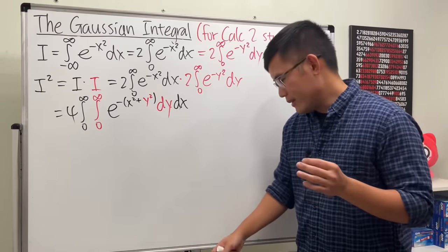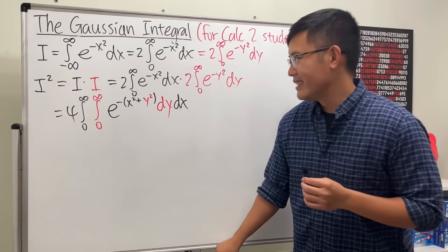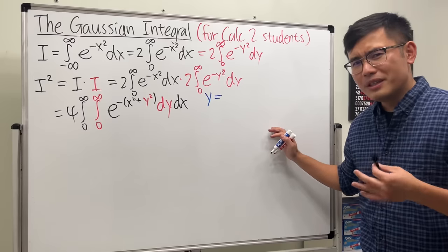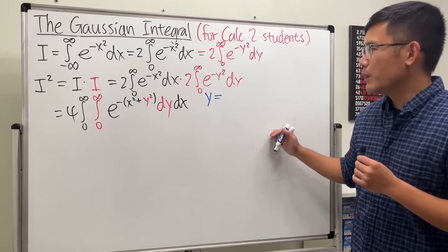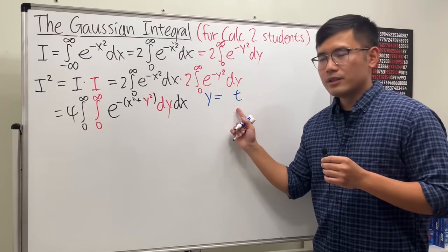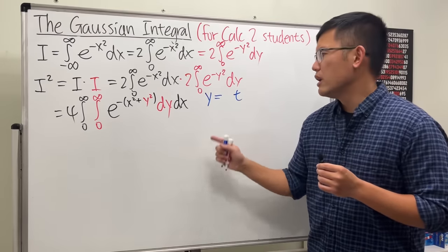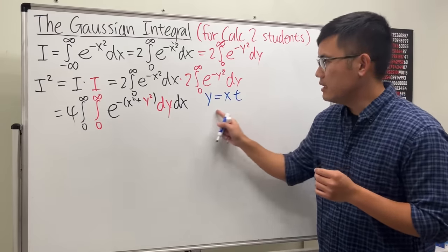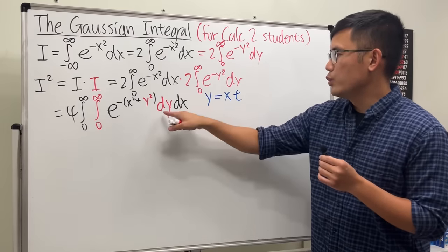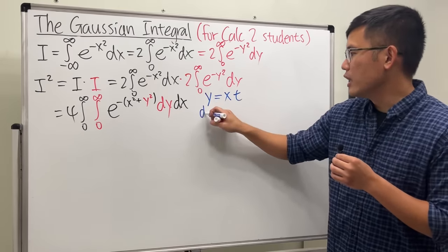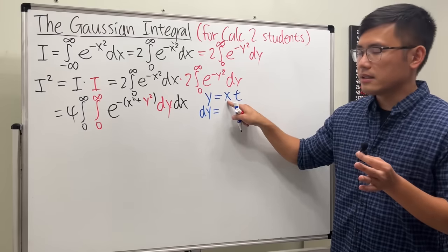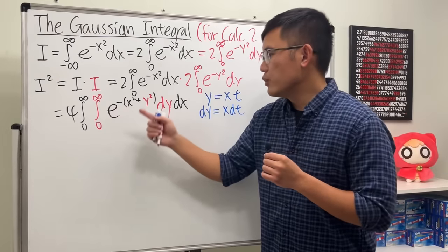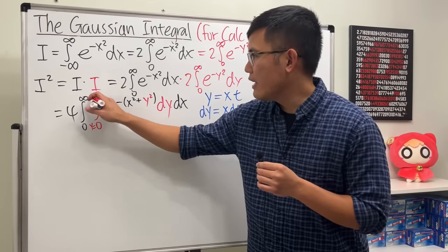Instead, let's do a substitution in the y world. I'll introduce a parameter t and let y equal t times x. Differentiating both sides, dy equals x dt, since x is treated as a constant here.